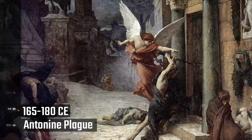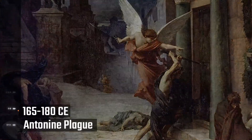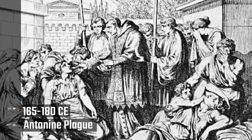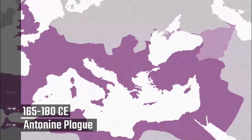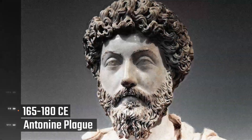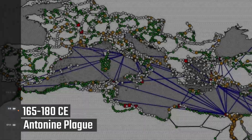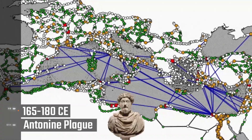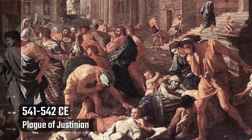Antonine Plague, 165 through 180 CE. The Antonine Plague — sometimes referred to as the Plague of Galen — erupted in 165 CE at the height of Roman power throughout the Mediterranean world, during the reign of Marcus Aurelius Antoninus. It was believed to be either smallpox or measles, with an estimated death toll of five million, including Emperor Marcus Aurelius, and it hastened the decline of the Roman Empire.